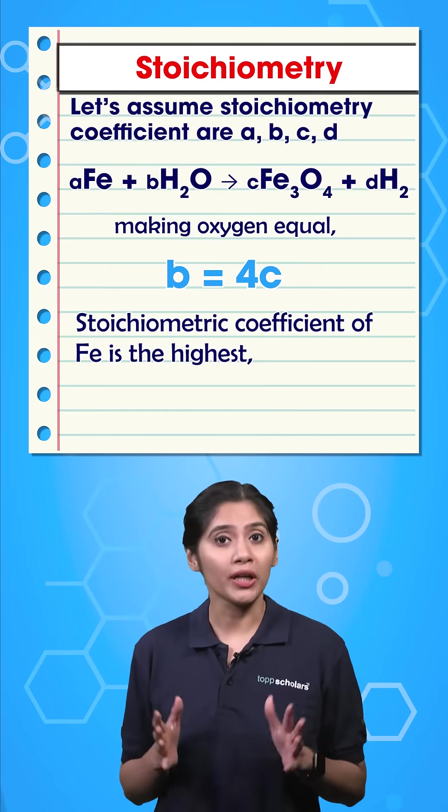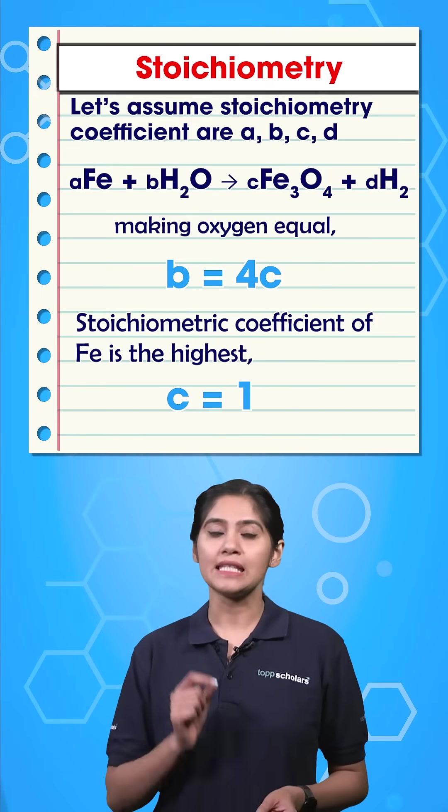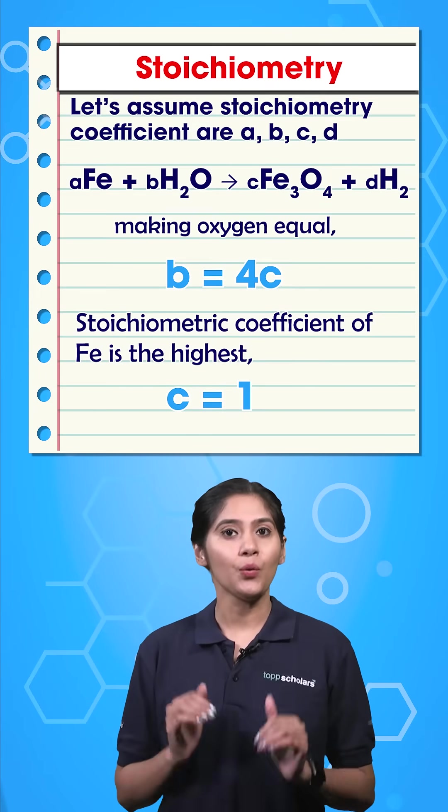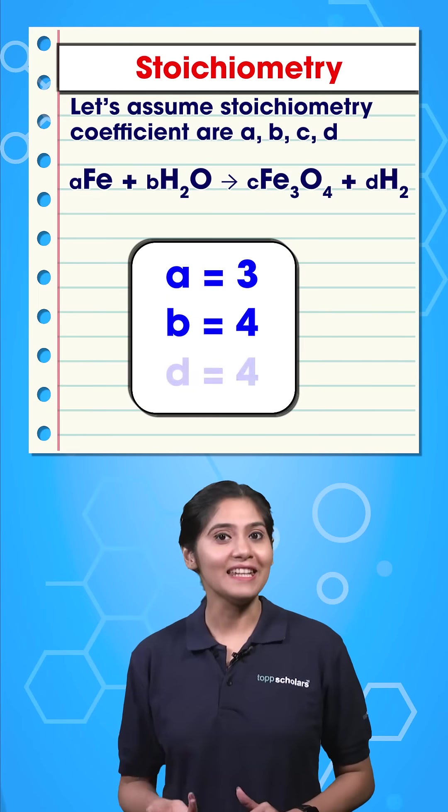Now, since the stoichiometric coefficient of Fe is the highest, we will take C is equal to 1. And hence, we have A is equal to 3, B is equal to 4, and D is equal to 4.